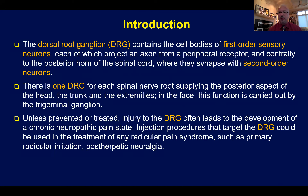From a point of introduction, the dorsal root ganglion contains cell bodies of first-order neurons which project an axon from the peripheral receptor and synapse with second-order neurons. There is one DRG for each spinal nerve root supplying the posterior aspect of the neck as well as the trunk and extremities. In the face, the function is carried out by the trigeminal ganglion.